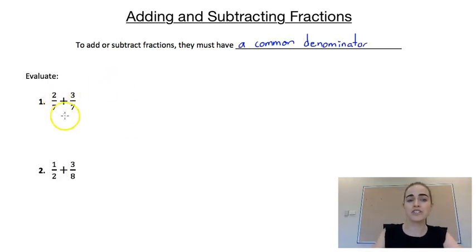Our first question is 2/7 plus 3/7. Now because they both have that same denominator, what we can do is just add the numerators. If we've got 2/7 and we've got 3/7, then all together we've got 5/7.